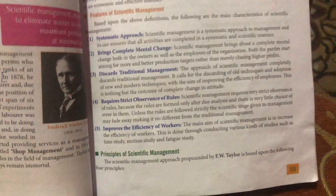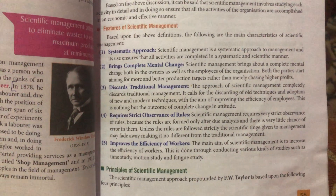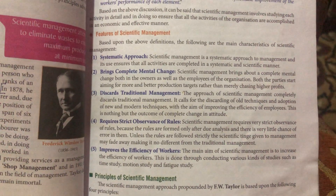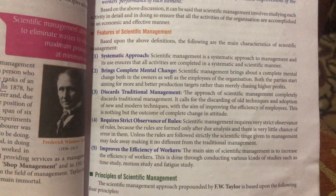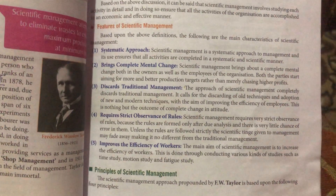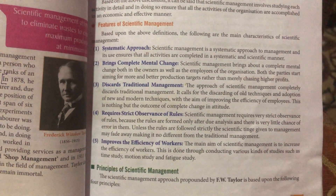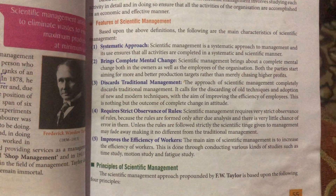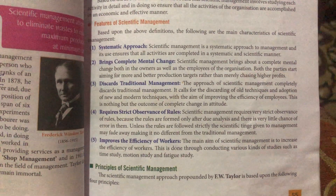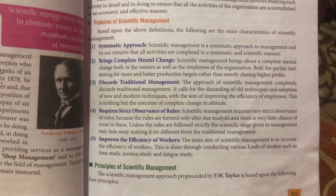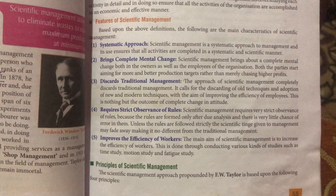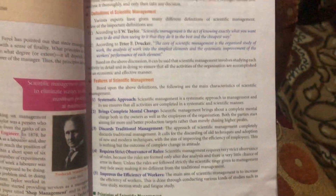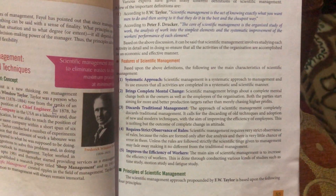The third feature is to discard traditional management. F.W. Taylor said that we should discard old techniques and adopt new techniques. If we adopt new techniques, our efficiency will also improve. The fourth feature requires strict observation of rules. There must be a set of rules in accordance with the laid plans so that objectives can be achieved. Our set of rules should be according to our plan so that we can easily achieve our objective.